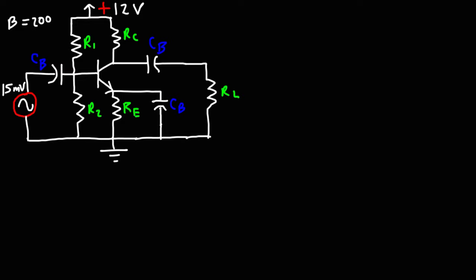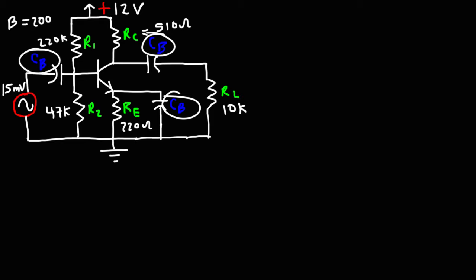Now in this example problem, we have the voltage divider bias circuit. Beta for the transistor is 200. RC is 510 ohms, RE is 220 ohms, R2 is 47 kiloohms, and R1 is 220 kiloohms. We do have a load resistor of 10 kiloohms. CB is the bypass capacitor, set to 1,000 microfarads so it doesn't introduce any significant capacitive reactance. Go ahead and calculate the voltage gain, and given the input voltage, calculate the output voltage across the load resistor.